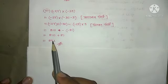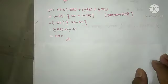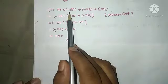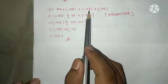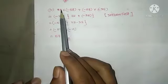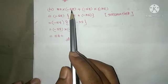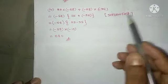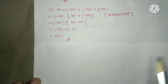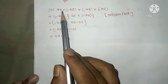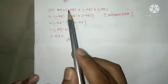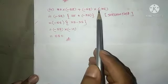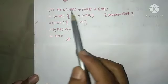Number three: 25 into minus 58 plus minus 58 into minus 35. We take minus 58 as a common factor from both terms: minus 58 into open bracket 25 plus minus 35 close bracket.